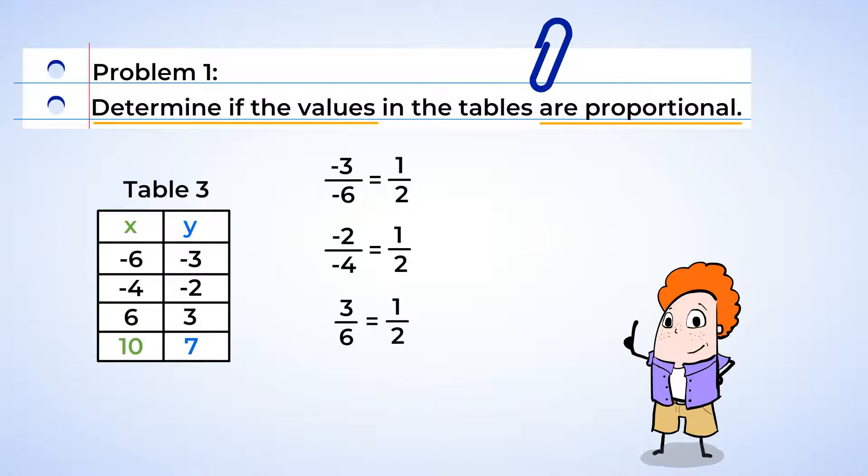There's one more to try. Hmm, 7 over 10 does not simplify to 1 half. That means the values in this table are not proportional.